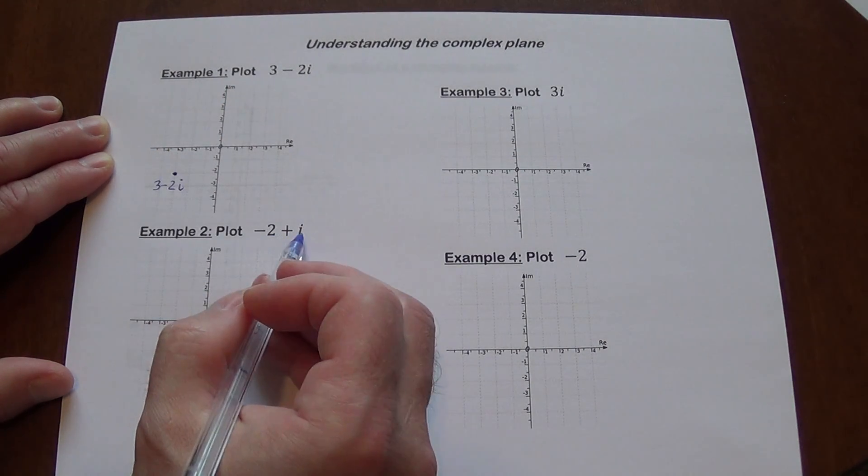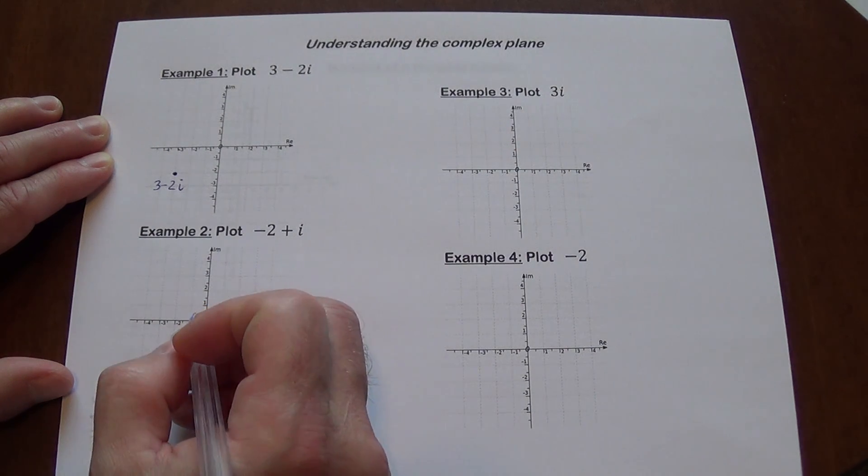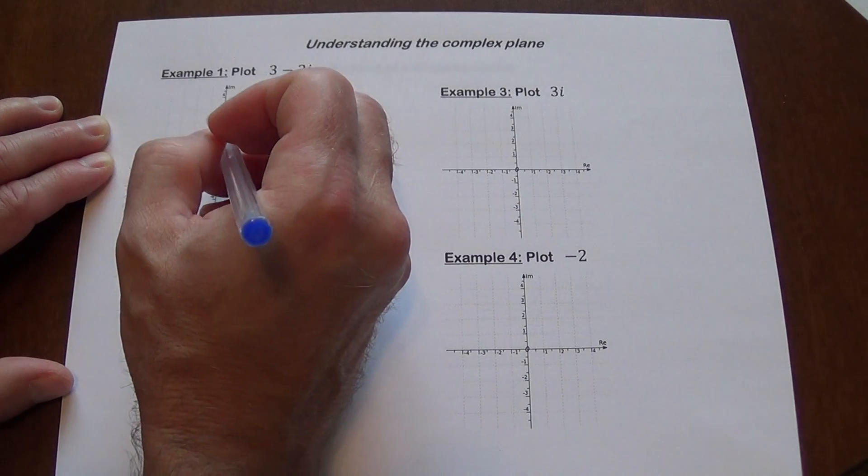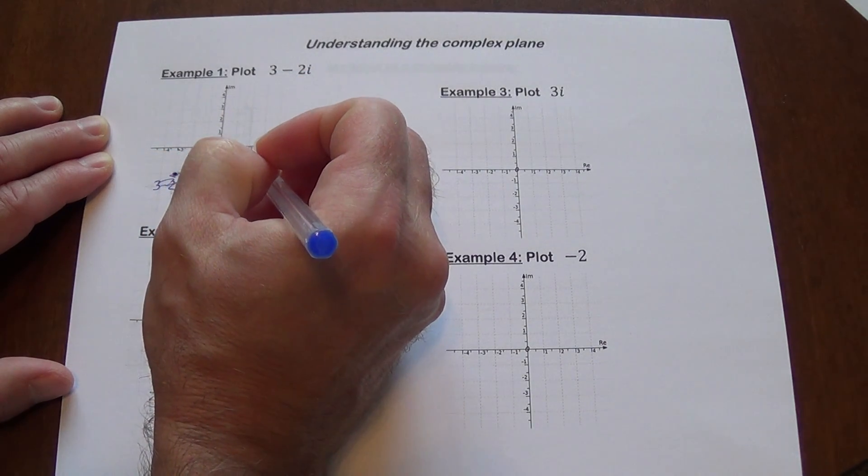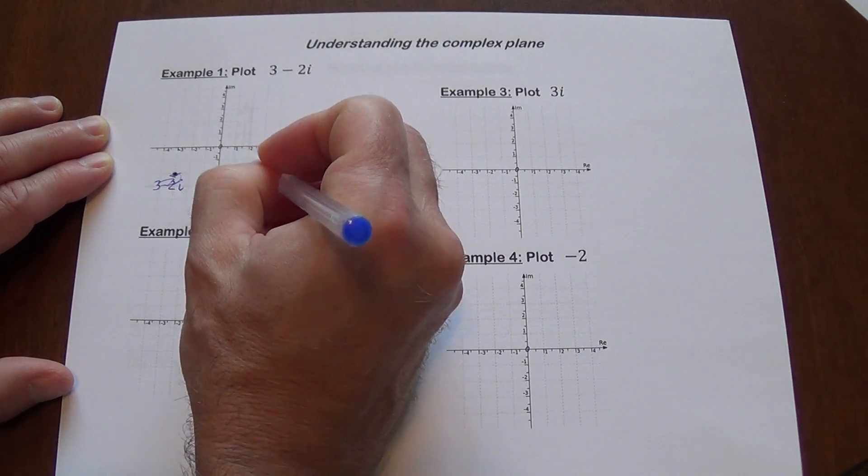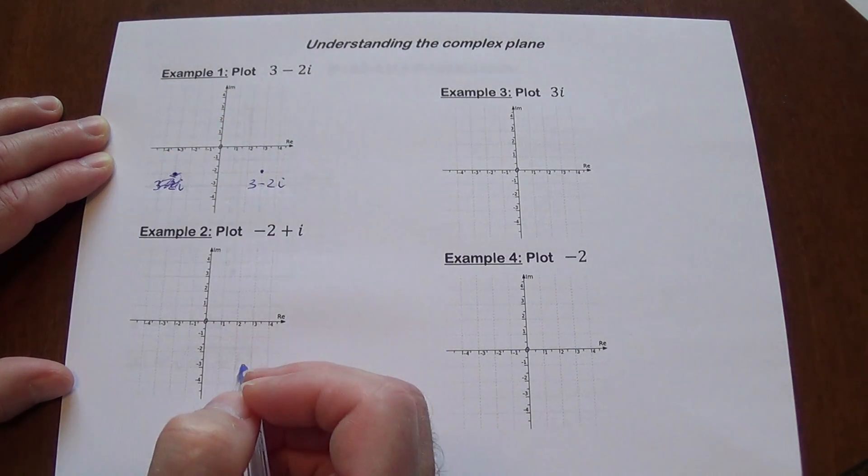Example 2, negative 2 plus i. So negative 2. Oh, my apologies actually. Here it's 3 minus 2i, it's positive 3 minus 2i. I apologize about that. This is the correct location.